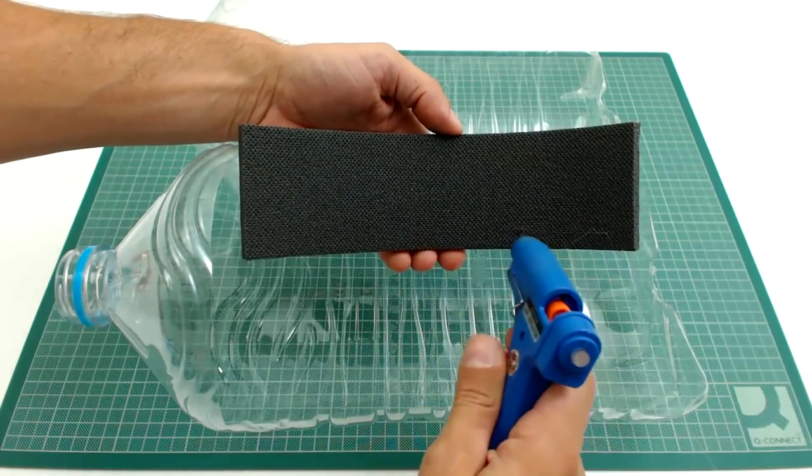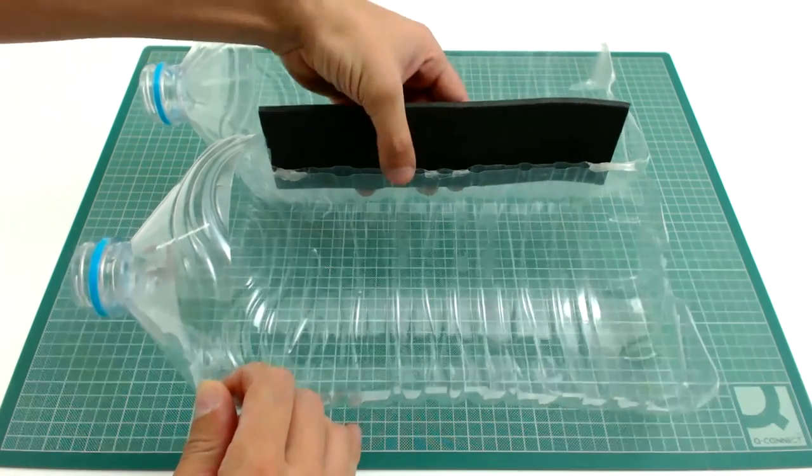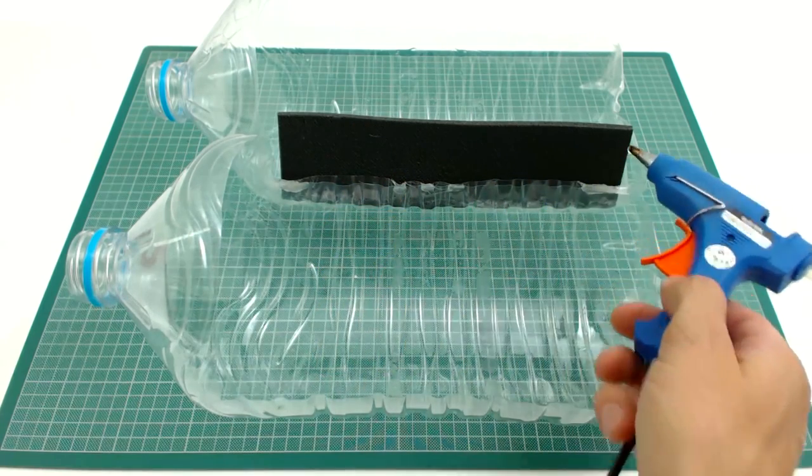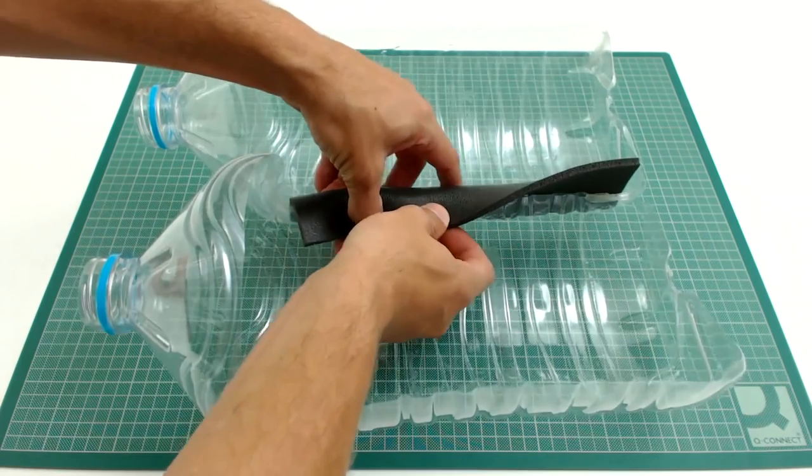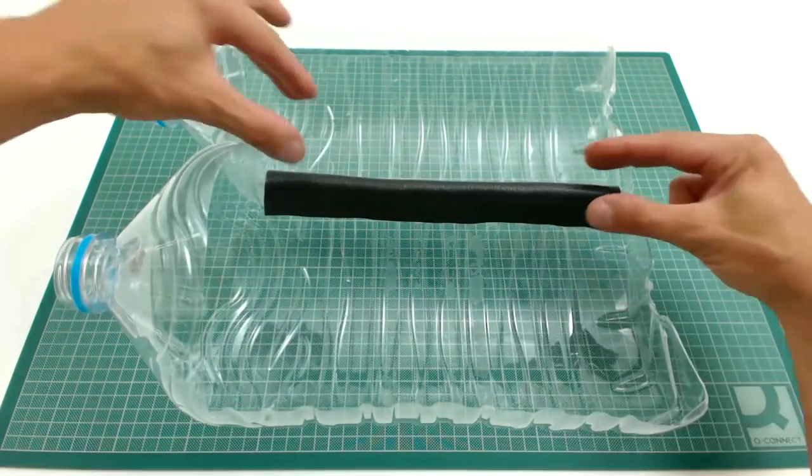Glue it by applying silicone. First glue it from one of its sides until it sticks. Wait a couple of minutes and then apply silicone on the other side. Fold it in this way. Once glued, you should end up with something like this.